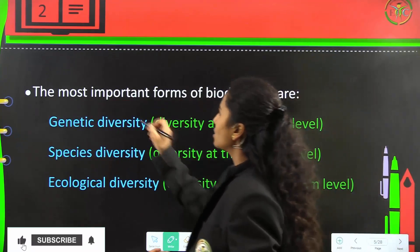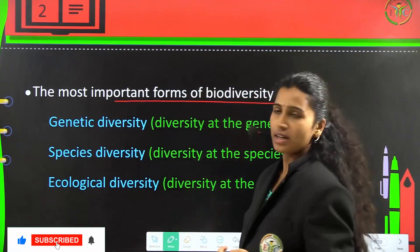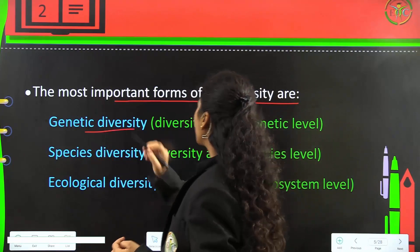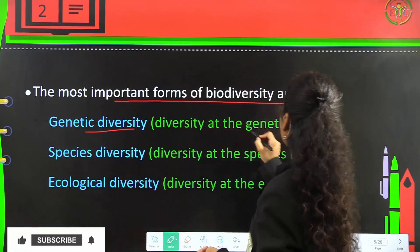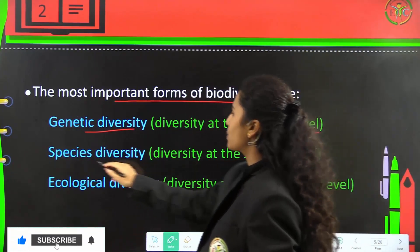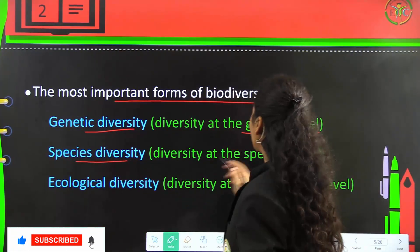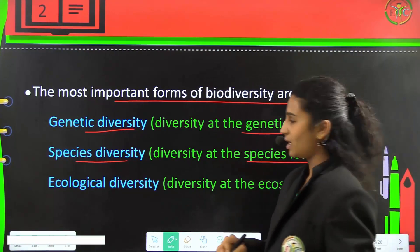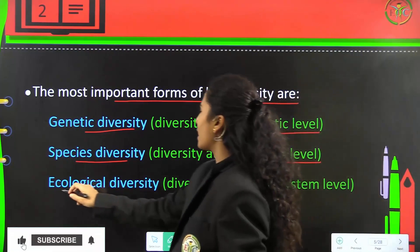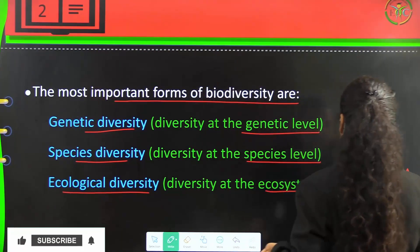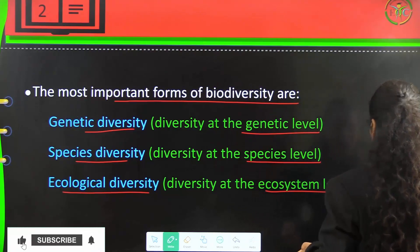The most important forms of biodiversity are: genetic diversity, which is at the genetic level; species diversity, the diversity at the species level; and ecological diversity, which is diversity at the ecosystem level.